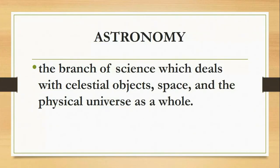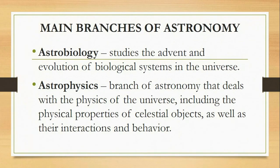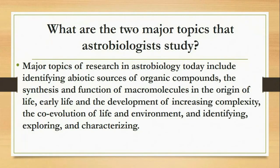Another branch of physical science is astronomy — the branch of science which deals with celestial objects, space, and the physical universe as a whole. The main branches of astronomy include astrobiology, which studies the advent and evolution of biological systems in the universe, and astrophysics, a branch of astronomy that deals with the physics of the universe, including the physical properties of celestial objects as well as their interactions and behavior.